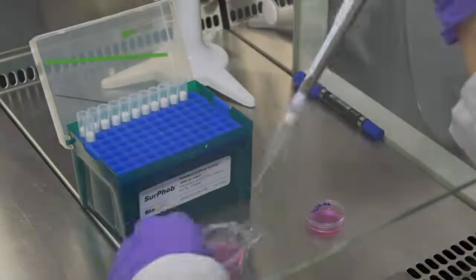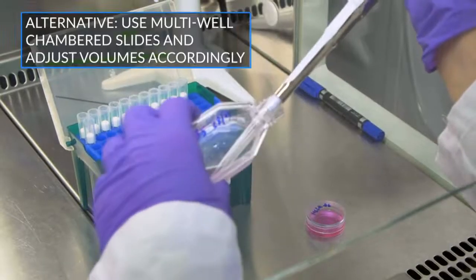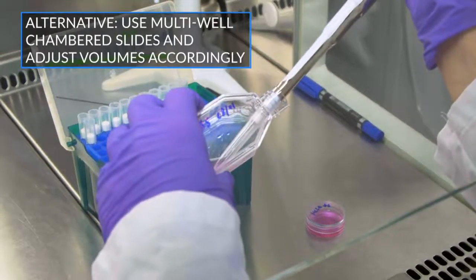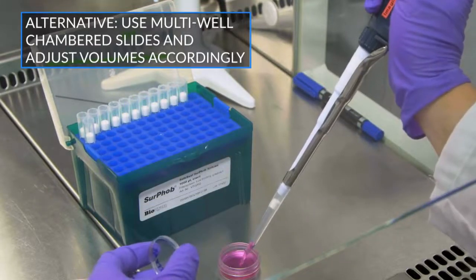One day before the labeling procedure, culture 4 times 10 to the 5th HeLa cells in 2 milliliters of medium in a 35mm Petri dish.